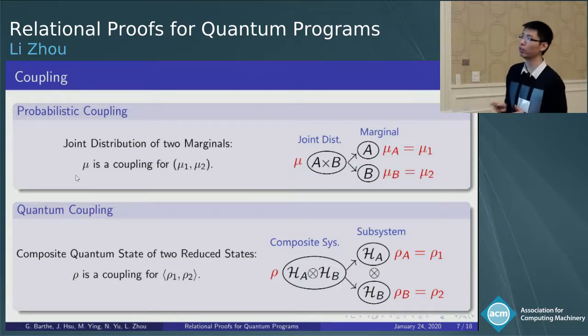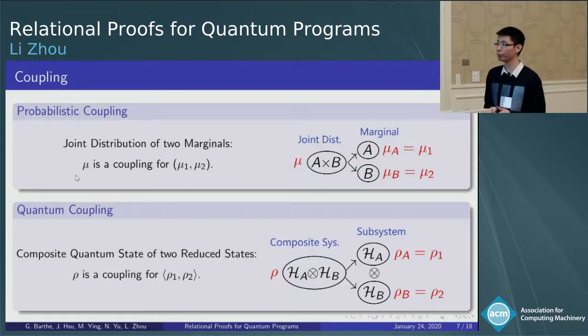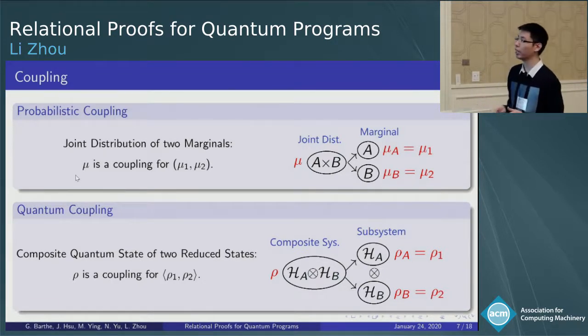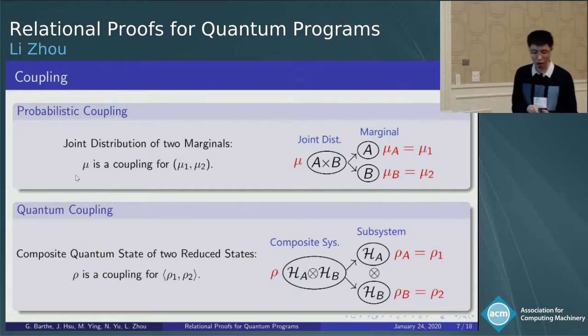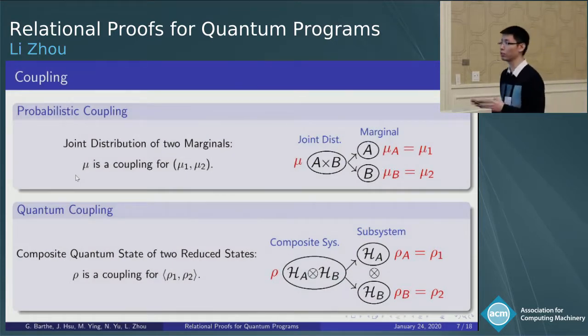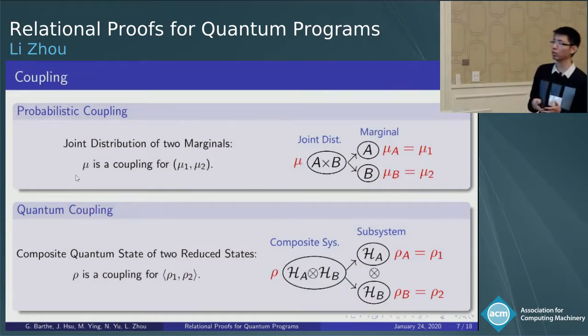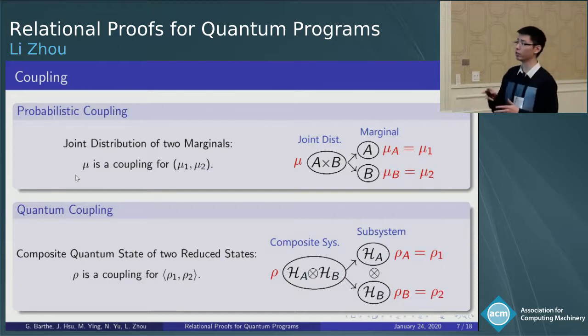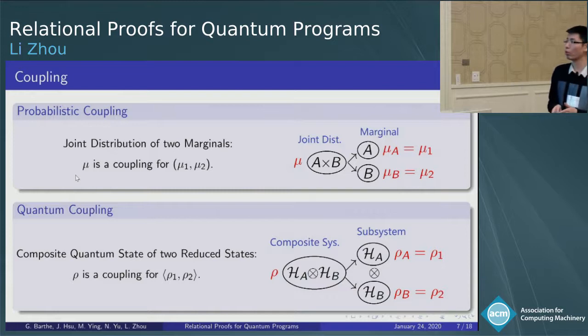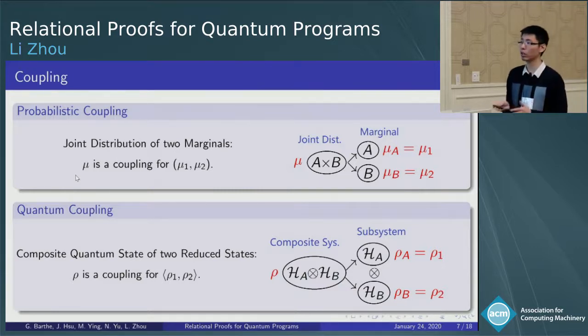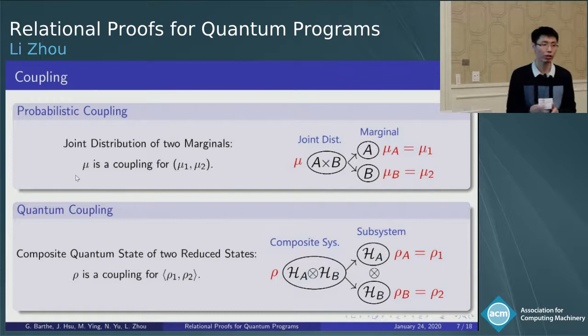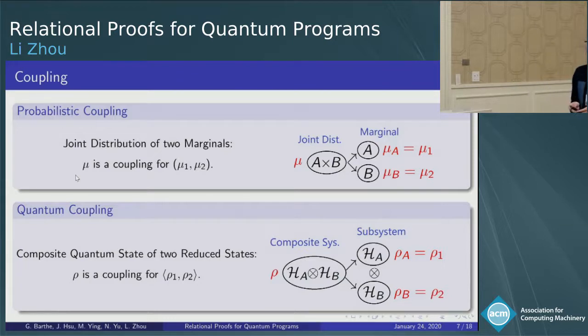And quantum coupling is an analog of probabilistic coupling. Here, suppose we have a quantum state rho over the composite system AB, and we use rho A and rho B to denote the reduced density matrix, which describes the state over the subsystem. We say rho is a coupling for rho 1 and rho 2 if its marginal rho A and rho B equals to rho 1 and rho 2. Note that a quantum coupling might be an entangled state, which is a peculiar phenomenon in quantum world. Of course, such quantum coupling can also capture the relationship between two quantum states.